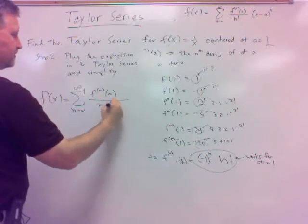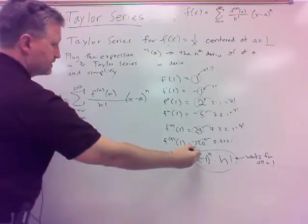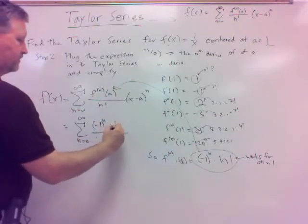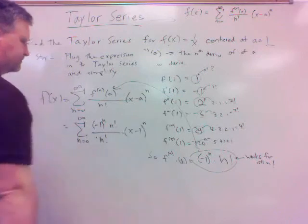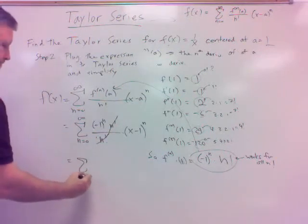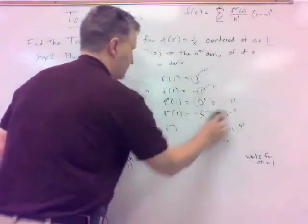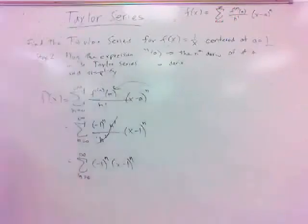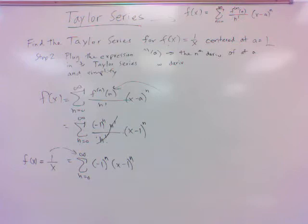So we plug in the nth derivative at a — n factorial, x minus a — plug in what we got there. This goes here, so that would be negative 1 to the nth power times n factorial over n factorial. And then x minus a, a is 1, to the nth power. Simplify it out. So f of x, 1 over x, power series centered at 1 is negative 1 to the n times x minus 1 to the n.